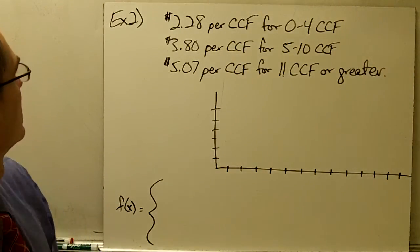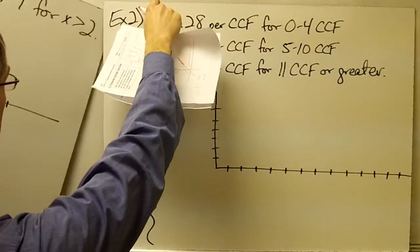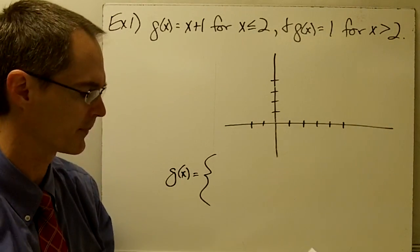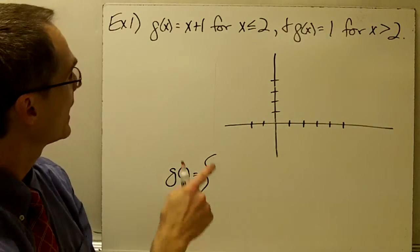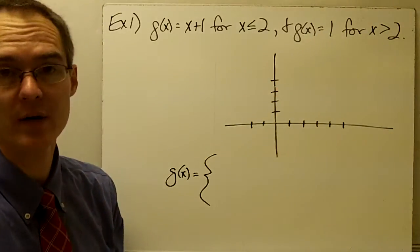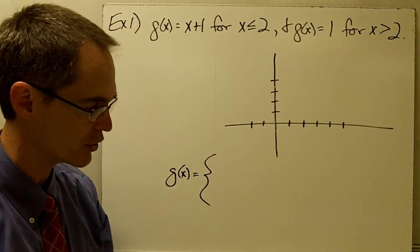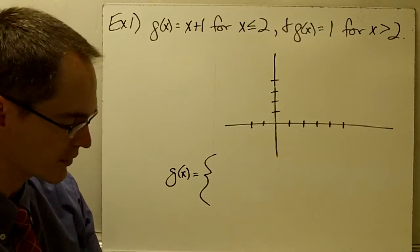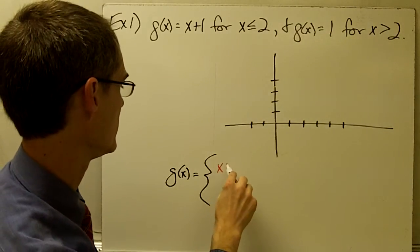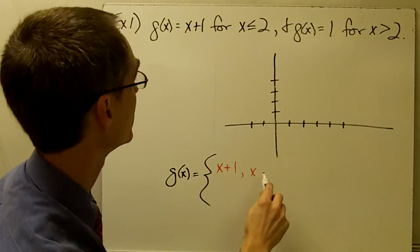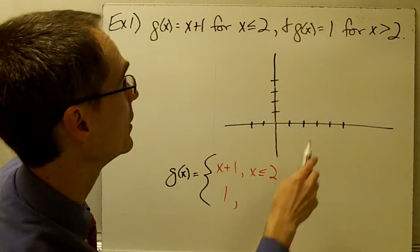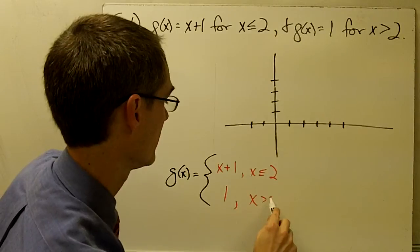Let's look at example number 1. The function g of x is defined as follows: g of x equals x plus 1 for x less than or equal to 2, and g of x equals 1 for x greater than 2. We want to write g of x using bracket notation and then graph the function. So g of x equals x plus 1, comma, x less than or equal to 2. And g of x equals 1, comma, x greater than 2.